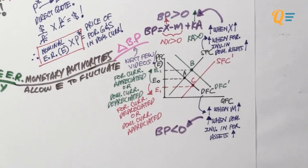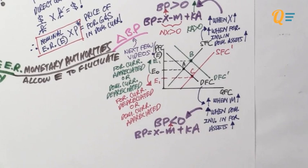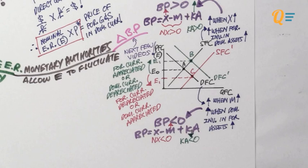For the case where the demand curve shifts out, there is a negative balance of payment. When imports increase, net exports is negative giving a negative current account. Or if there is more domestic investment in foreign assets, capital is flowing out, making the capital account negative — that is how we get a negative balance of payment. If you don't understand all these points right now, don't worry — we'll be covering them in detail in the next few videos.